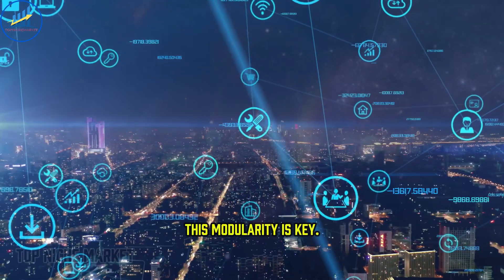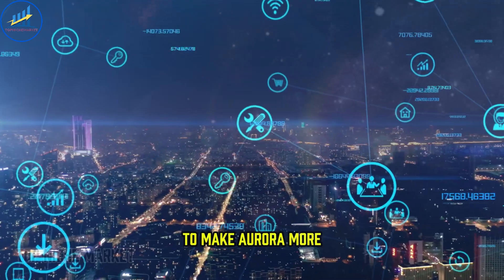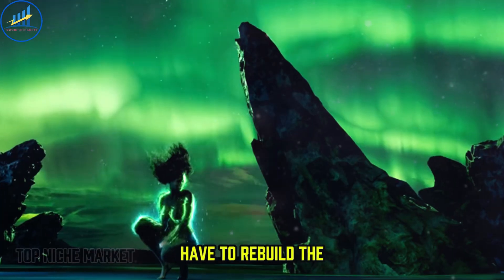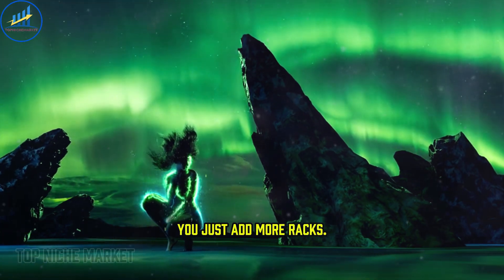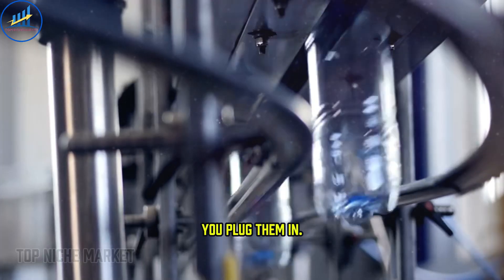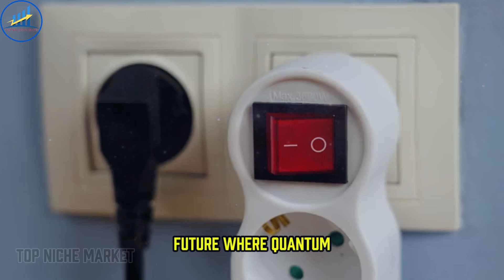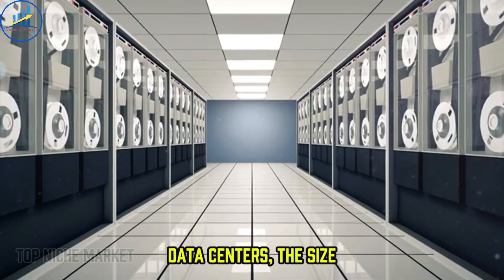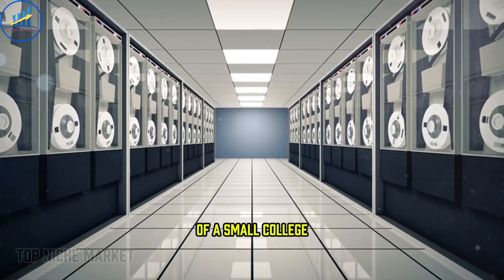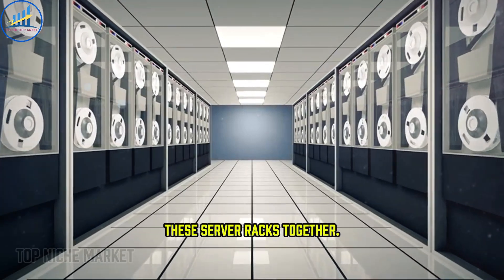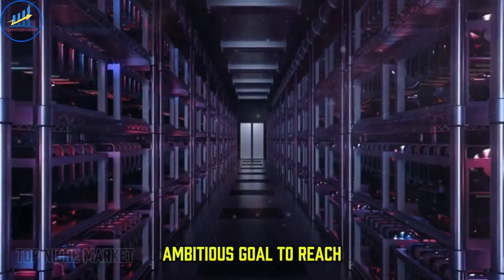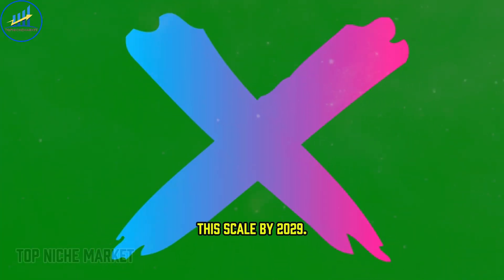This modularity is key. To make Aurora more powerful, you don't have to rebuild the entire thing. You just add more racks, you plug them in. This is the vision: a future where quantum data centers, the size of a small college campus, are built by linking thousands of these server racks together. Xanadu has set an ambitious goal to reach this scale by 2029, but they are also realists.